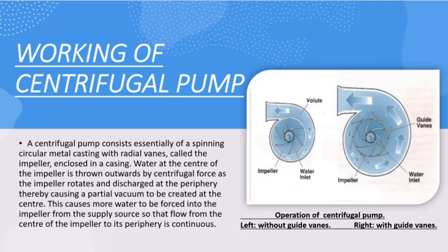The main key element of a centrifugal pump is the impeller. It has an eye at the midsection through which water flows in. When you prime the pump, it creates an initial suction at the eye of the impeller, causing water to flow in. As the water enters, the rotating impeller throws it towards its periphery, again creating a partial vacuum at the center which allows more water to enter. This continues, and the water thrown to the periphery is collected through the volute casing and discharged.